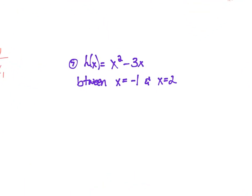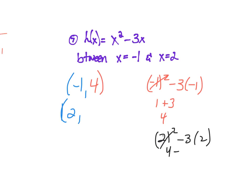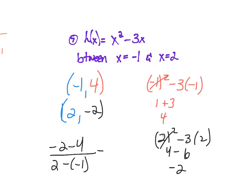Same thing for x equals negative 1 and positive 2. Plug in negative 1: negative 1 squared minus 3 times negative 1 equals 1 plus 3 equals 4. Plug in 2: 2 squared minus 3 times 2 equals 4 minus 6 equals negative 2. Average rate of change: negative 2 minus 4 over 2 minus negative 1, which is negative 6 over 3, giving negative 2.